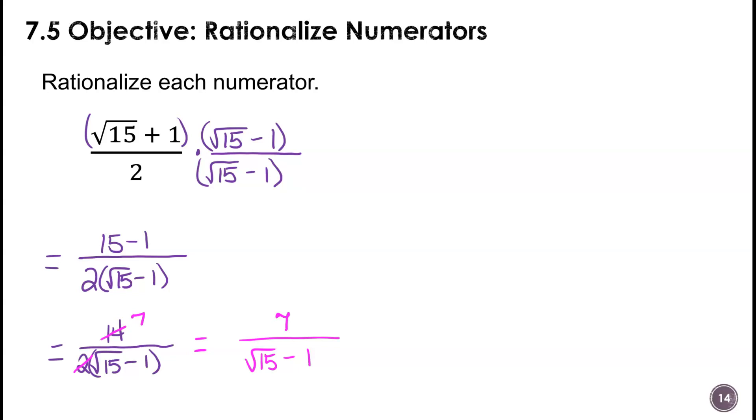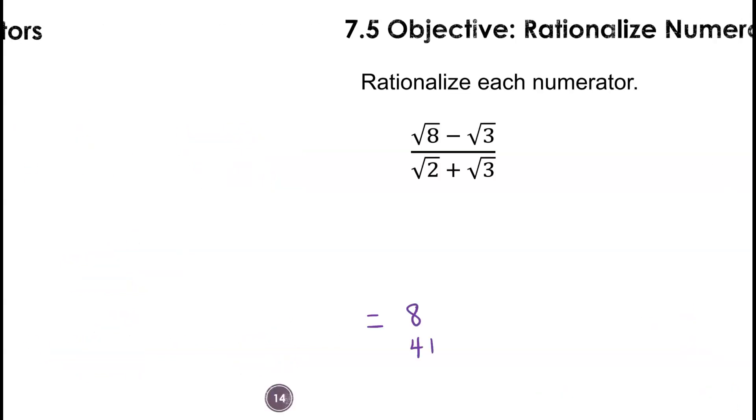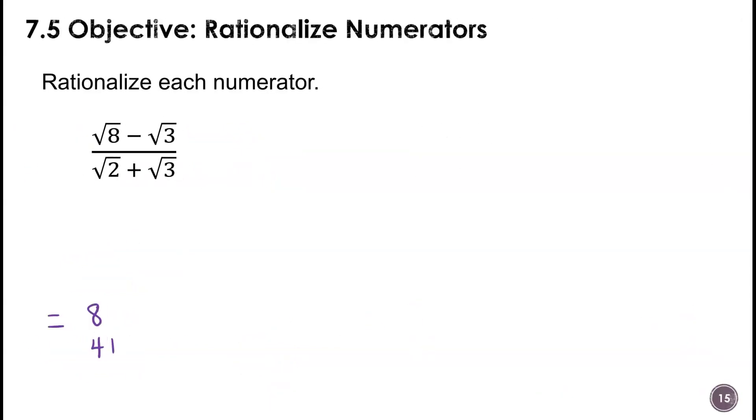And this answer is 7 over the square root of 15 minus 1. All right, and so that's finished. There were some more things that I didn't get erased. I have this little box that was right there.